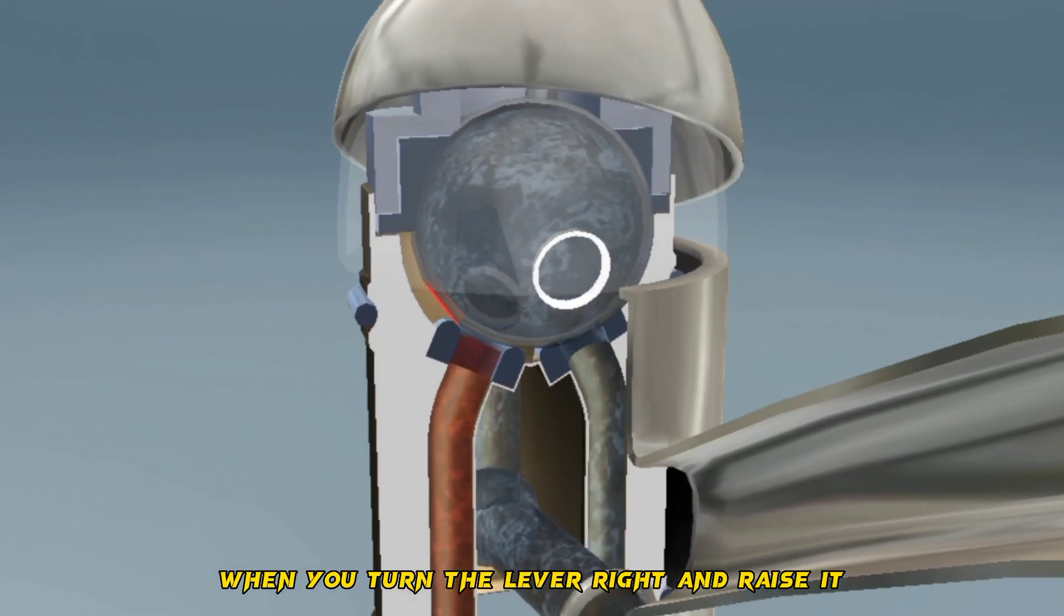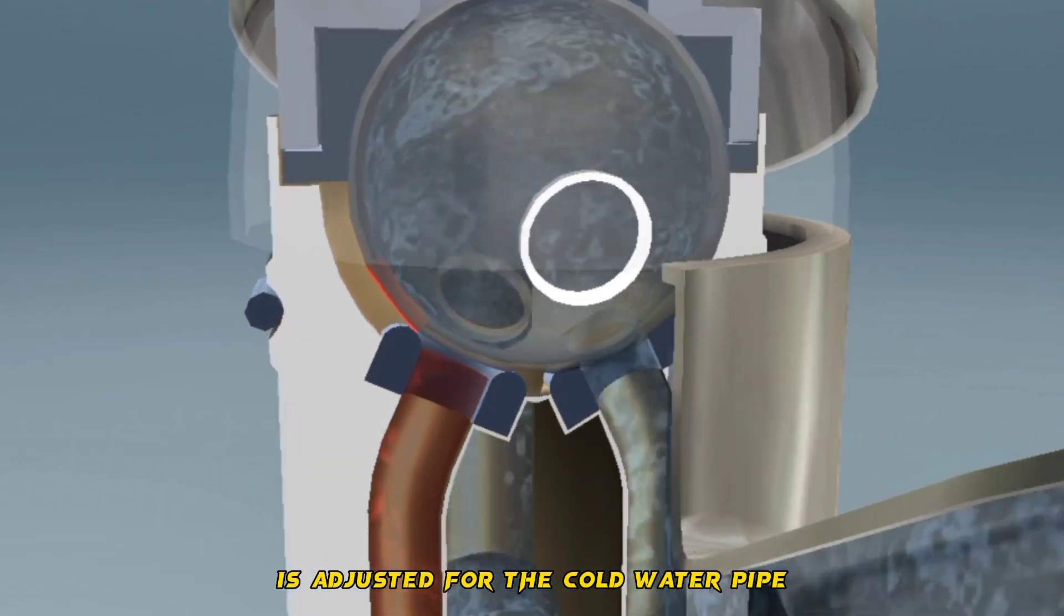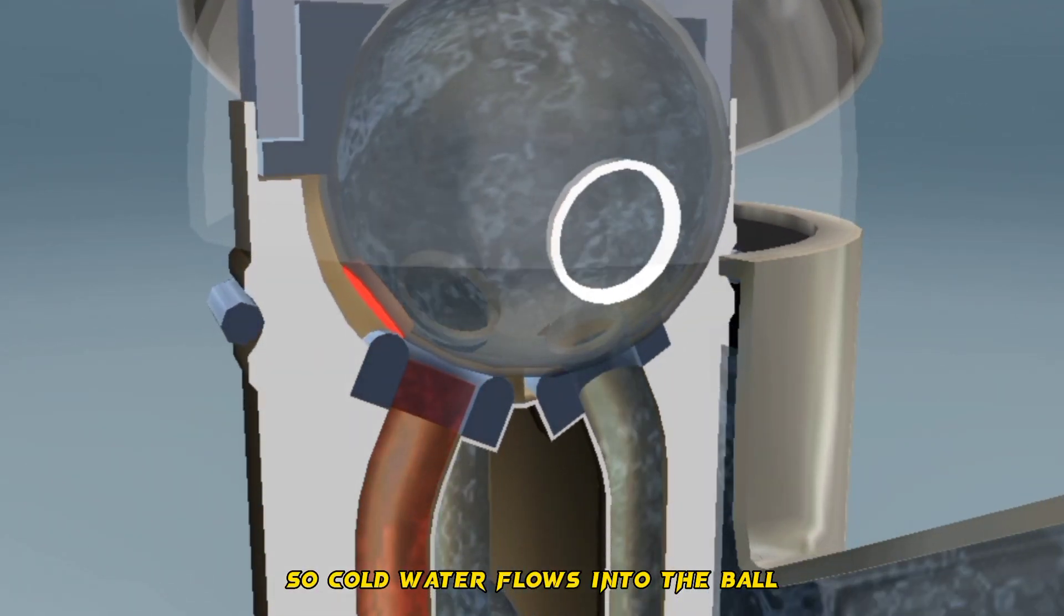When you turn the lever right and raise it, the hole with the blue rim is adjusted for the cold water pipe, so cold water flows into the ball.